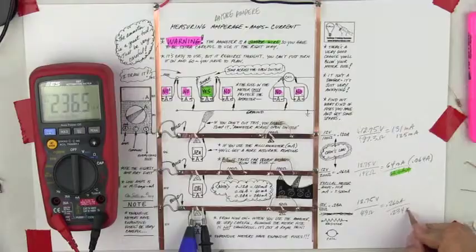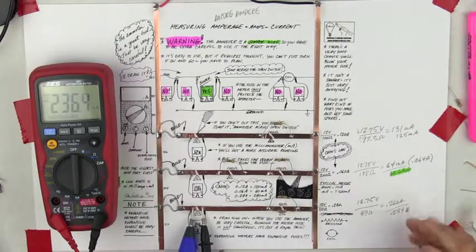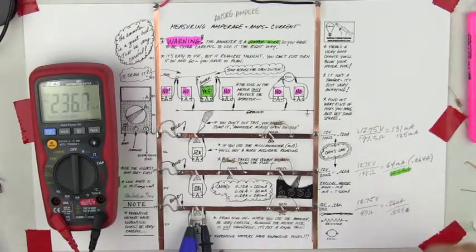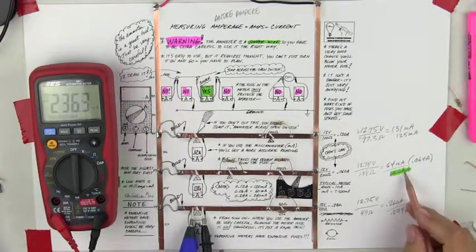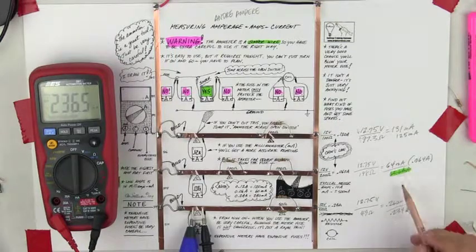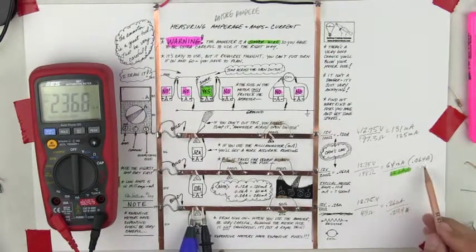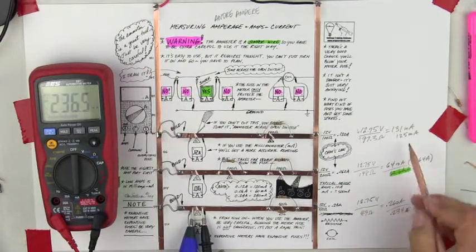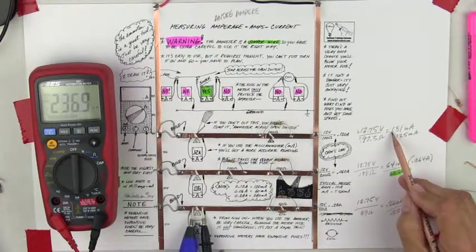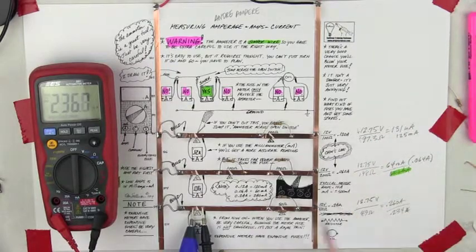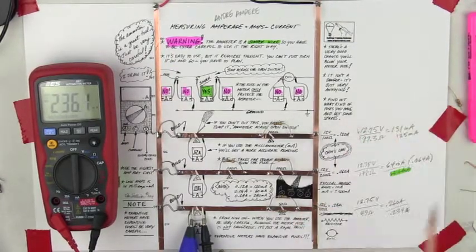Quick note here, you can't use milliamps in the calculation. You have to use amps, so you have to convert everything to amps. So you can't use 64, you'd have to use 0.064. You couldn't use 131, you'd have to use 0.131 in order to do the math. So don't, if you're getting weird numbers, that might be the reason.